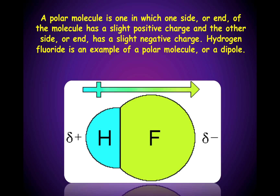Fluorine has a stronger attraction for the bonding pair of electrons than hydrogen does. Notice the direction of the dipole — it is pointing towards the fluorine end of the molecule.